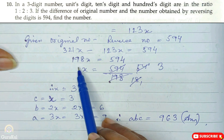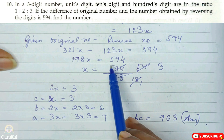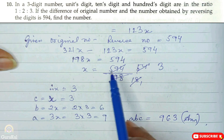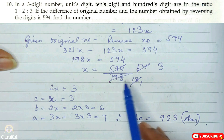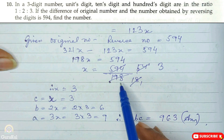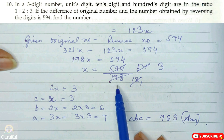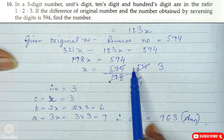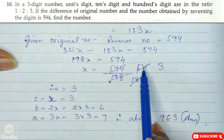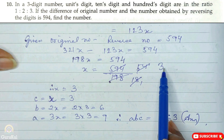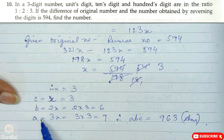So 321X minus 123X = 594, giving us 198X = 594. Therefore X = 594 divided by 198. Dividing: 594 ÷ 198 — dividing both by 11 gives 54/18, and 54 ÷ 18 = 3. So the value of X is 3.